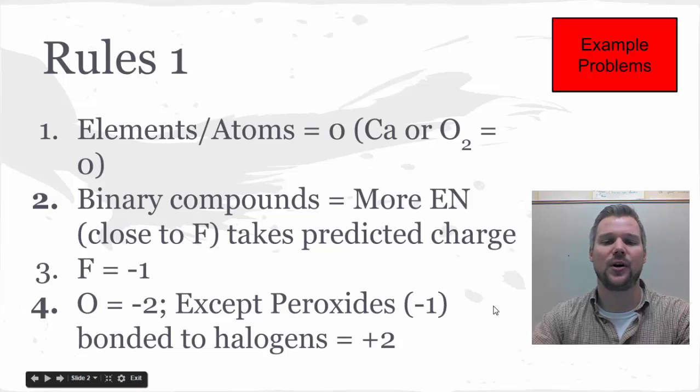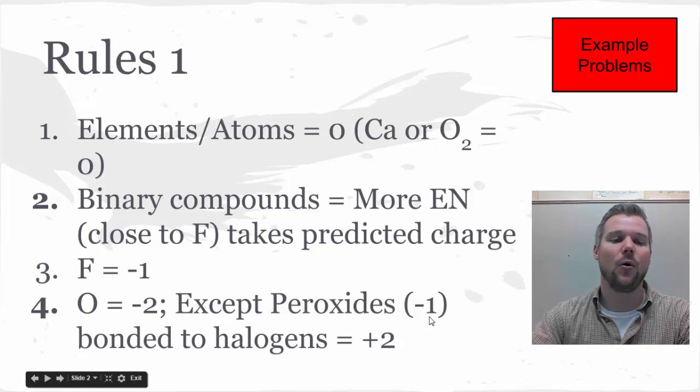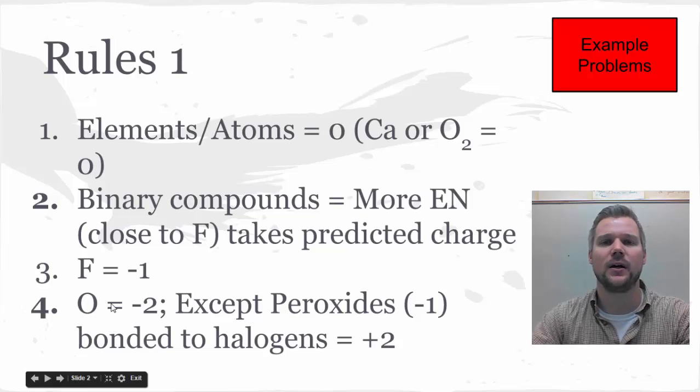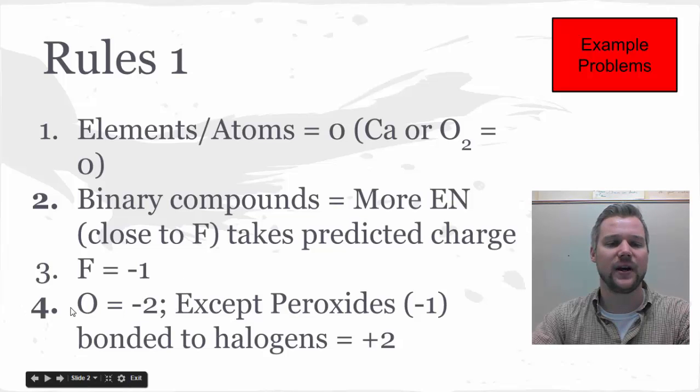Or if oxygen is bonded to a halogen, in which case it's +2. But we use this first part all the time: O = -2. This is one of the most common rules we're going to use because oxygen is part of an oxyanion, and oxyanions are really common in many compounds we look at. Be very familiar with this rule: O = -2.